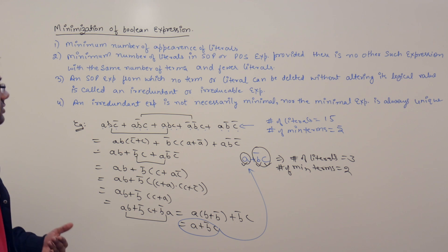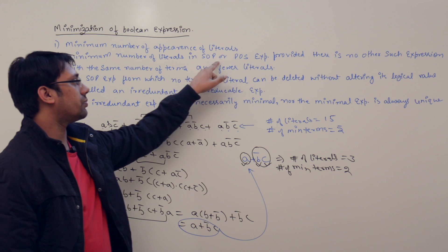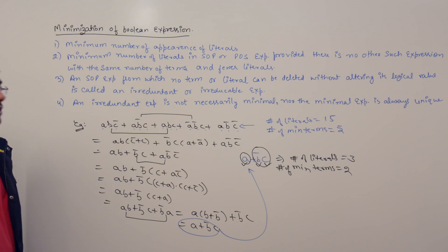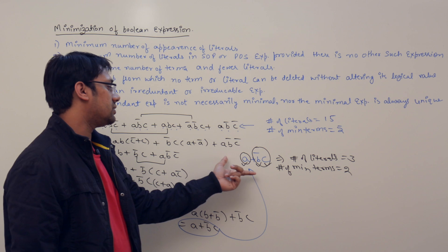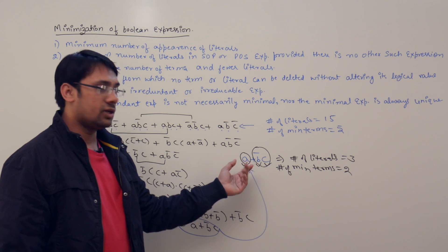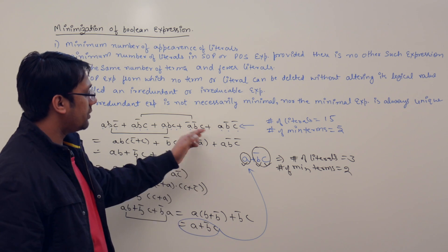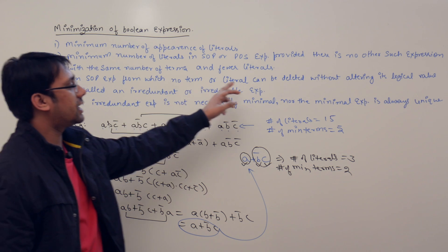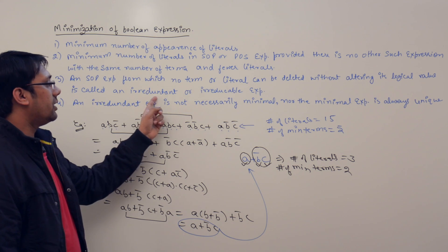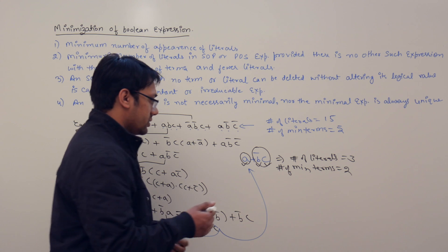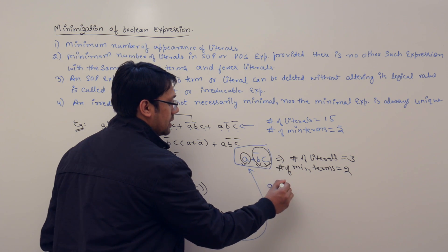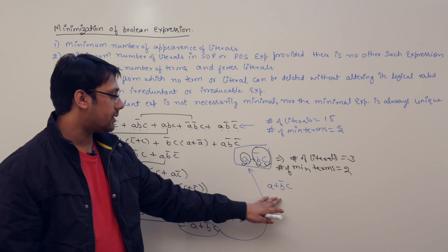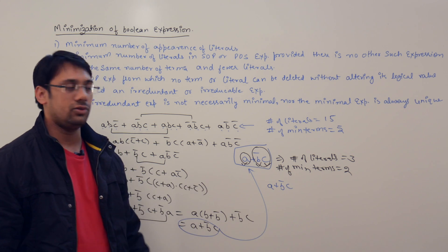The cost criteria includes: minimum number of appearances of literals. Here we have only three literals, whereas before we had 15. We also want the minimum number of literals in SOP or POS expression, provided that there is no other such expression with the same number of terms and fewer literals. In this case, there is no other expression having three literals and the same number of minterms, so the minimization is unique.